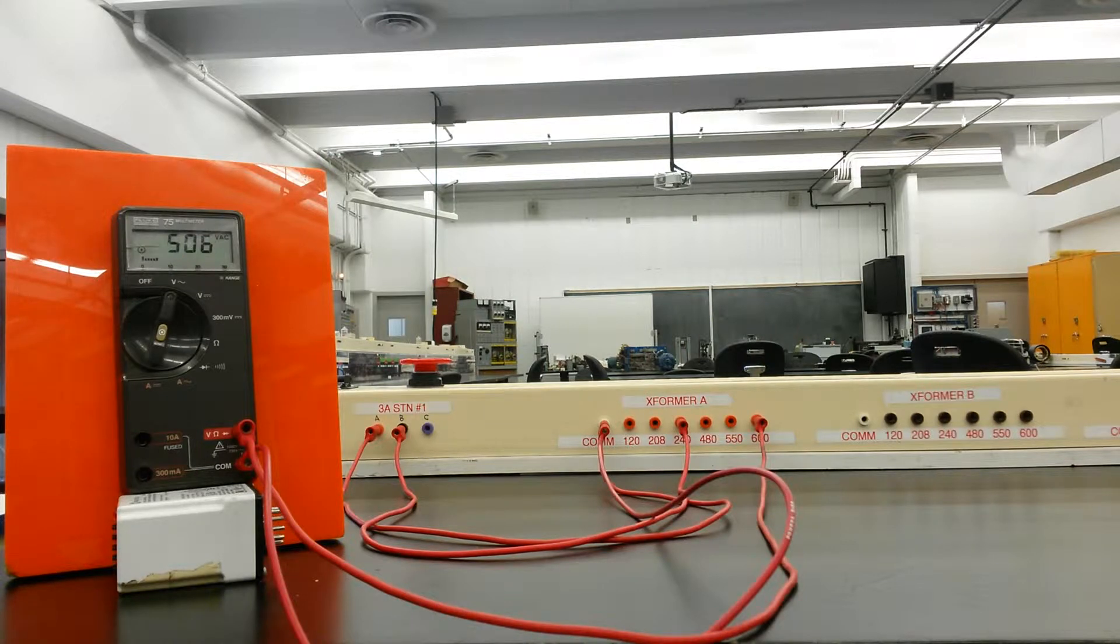Okay, so now instead of seeing the 600 volts, I'm down to 500. Right, the ratio has now changed on all of the windings of the entire transformer.